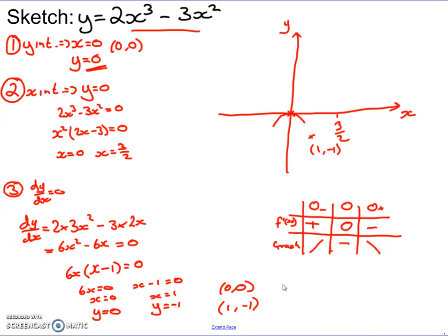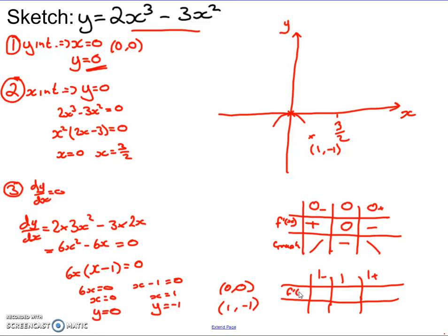For the stationary point at (1, -1), set up a new nature table around x equals 1. Approaching from below (say 1/2), the derivative is negative — graph coming down. Approaching from above (say 2): 6 times 4 minus 6 times 2 equals 24 minus 12 equals 12, which is positive — graph going up. So (1, -1) is a minimum turning point.